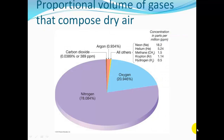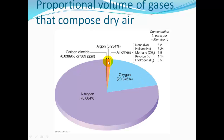Here we have a portion of volume of gas representing our atmosphere. It's over 78% nitrogen, over 20% oxygen, a tiny bit of carbon dioxide, a tiny bit of argon, and all other gases.